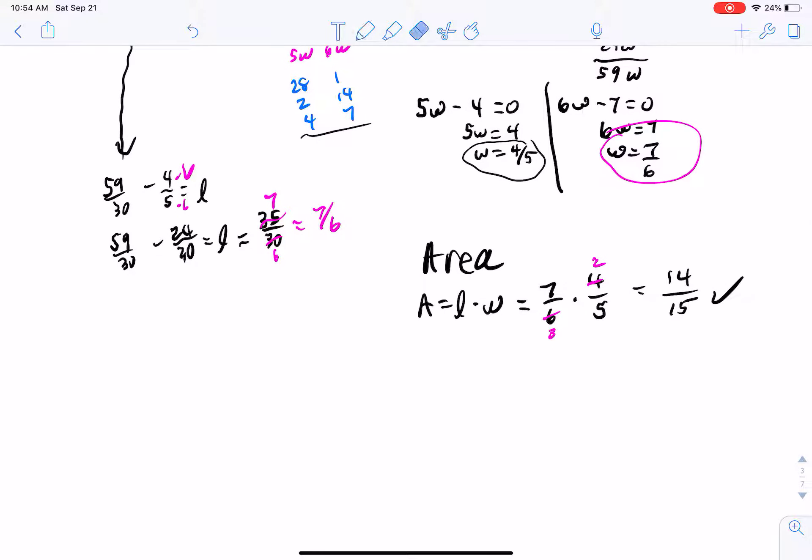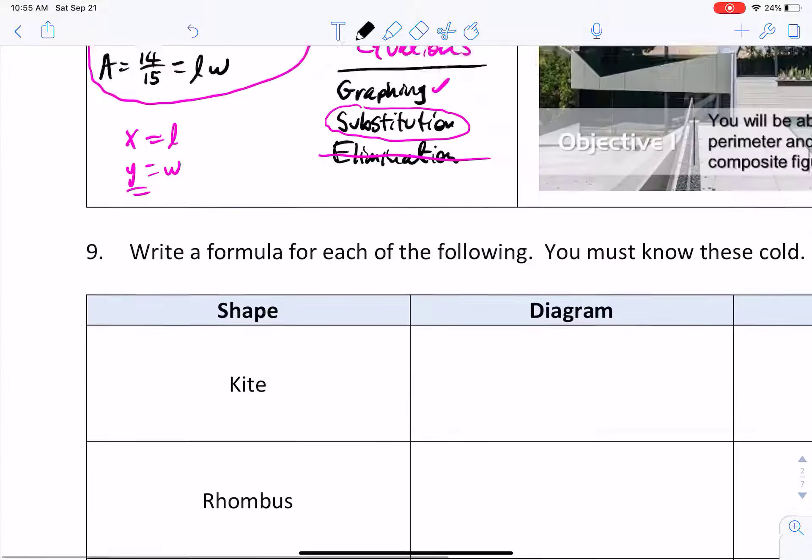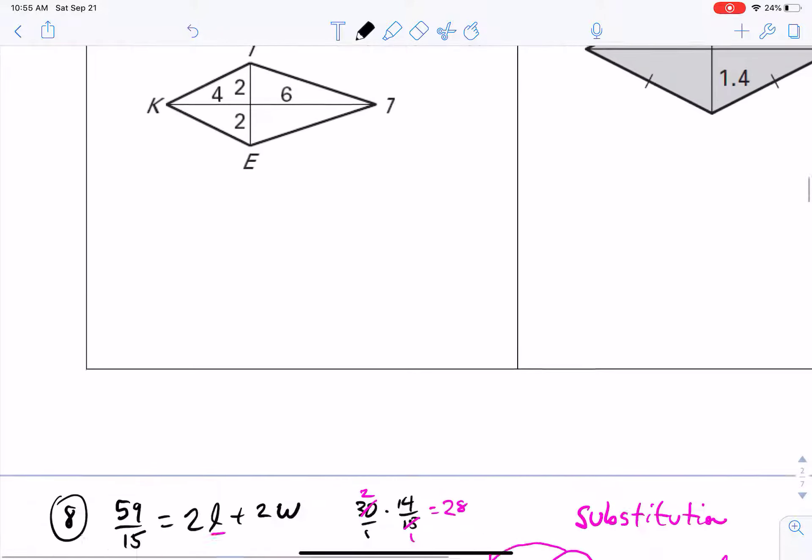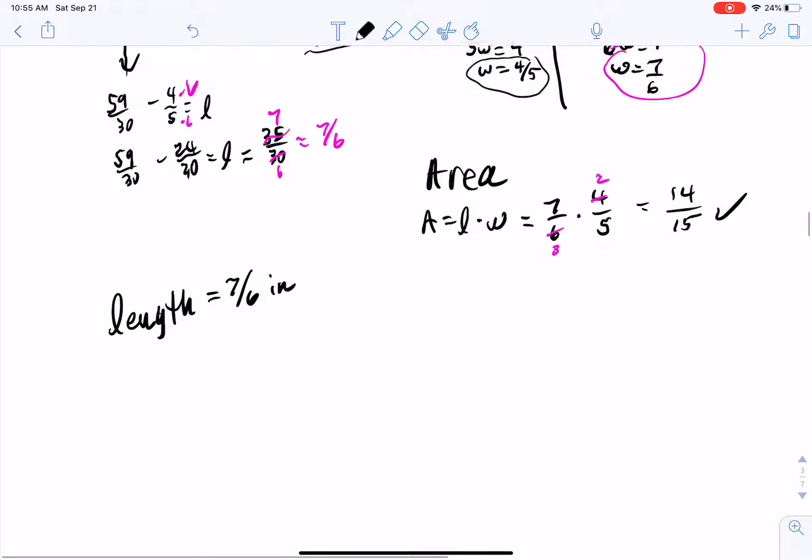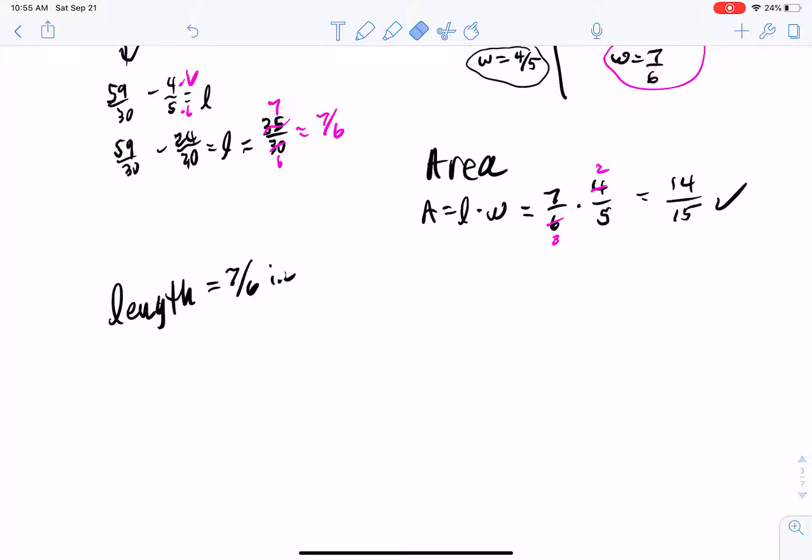So we've got my length is equal to 7 over 6. I think this is in inches. I'm going to have to scroll all the way back up here. No, it is not. It's in centimeters. So my width is equal to 4 fifths centimeters.